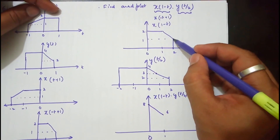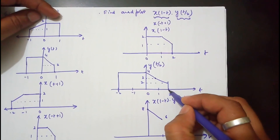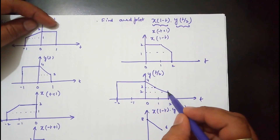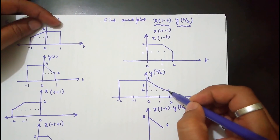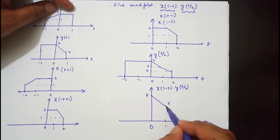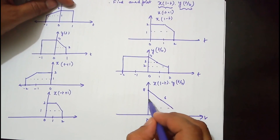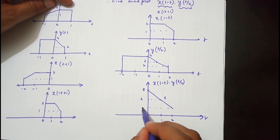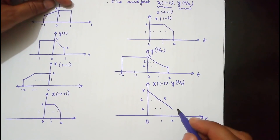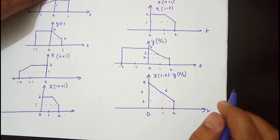At t=2, x(1-t) has amplitude 1 and y(t/2) has amplitude 2, giving 2×1=2. So the product waveform goes from amplitude 8 at t=0, declining to 6 at t=1, then to 2 at t=2, after which both waveforms go to 0. The final product waveform is a declining shape over the interval 0 to 2.